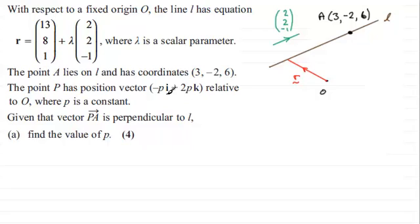We've got the point P though, which has this position vector (-pi + 2pk) relative to O. It's not on the line, but we know that PA is perpendicular to the line l. So I'm going to put P at a point over here. Let's just do it in blue. There we go. We'll put that as P.